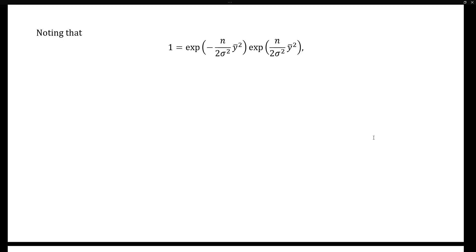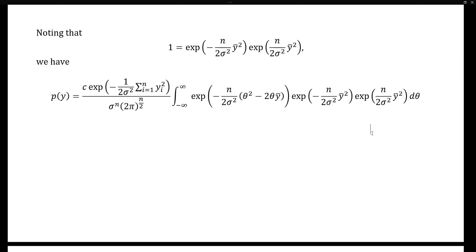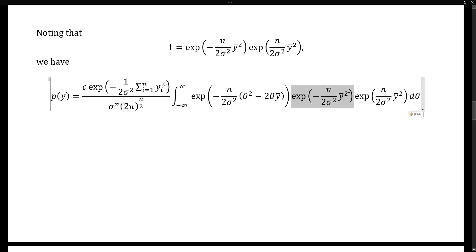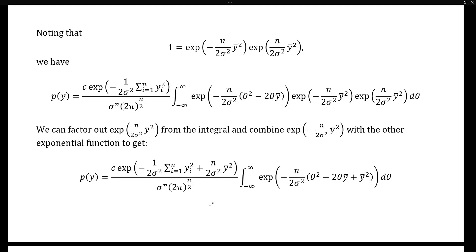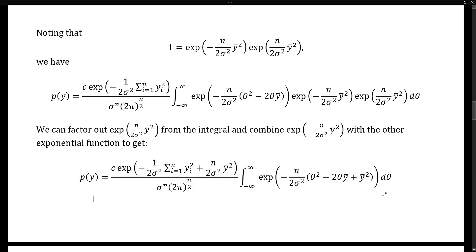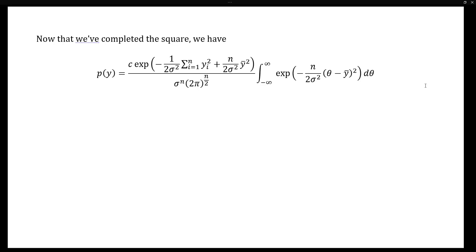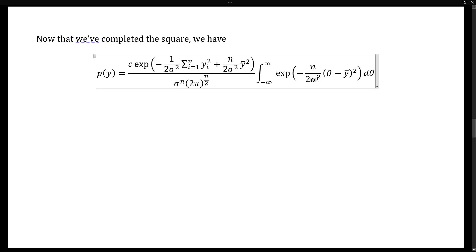To do that, we'll multiply the inner part by 1 in a special way. Specifically, we note that 1 equals the exponential function of negative n over 2 sigma squared times y-bar squared, times the exponential function of n over 2 sigma squared times y-bar squared. Multiplying by that form of 1 in the integral, we get a long expression for the marginal density of y. We can bring this exponential kernel outside the integral and combine it with the other exponential kernel. That allows us to simplify the marginal density of y to this expression here. Notice that we've now completed the square, and we can rewrite the inner part of the exponential function as theta minus y-bar squared.